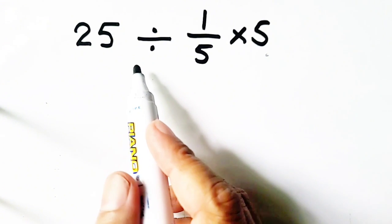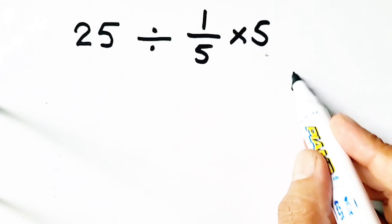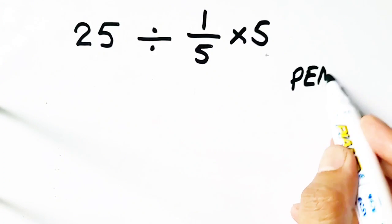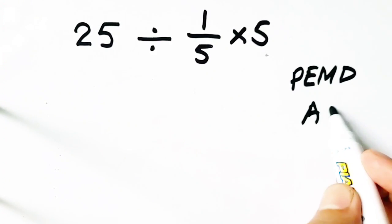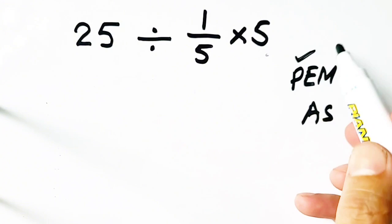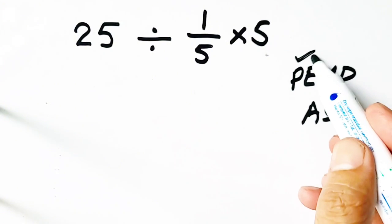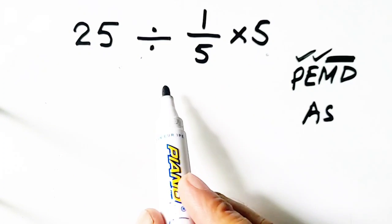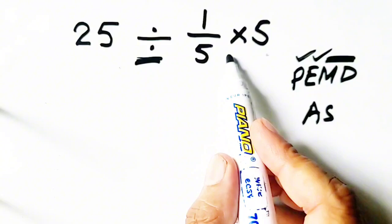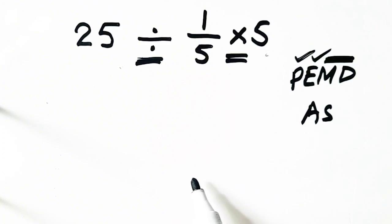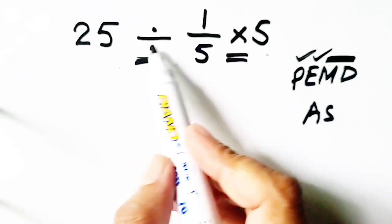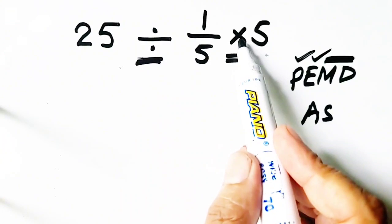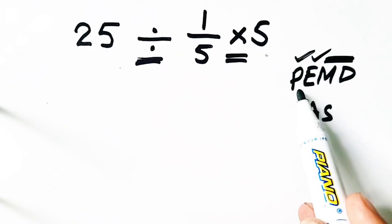We need to follow the PEMDAS rule: first parentheses should be solved, then exponents, then multiplication and division, then addition and subtraction. This question has division as well as multiplication, so the question arises: should we solve division or multiplication first? According to PEMDAS...